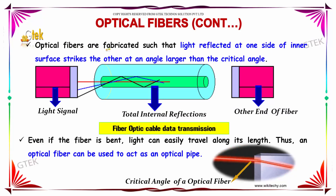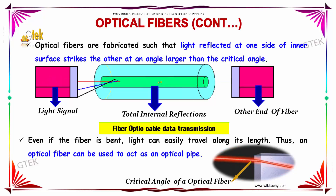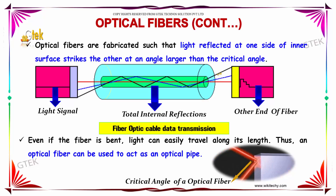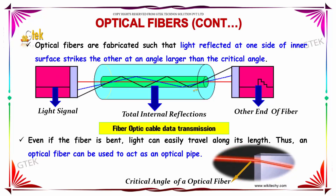The optical fibers are fabricated such that the light reflected at one side of the inner surface strikes the other at an angle larger than the critical angle. Even if the fiber is bent, light can easily travel along its length. Thus, an optical fiber can be used to act as an optical pipe.